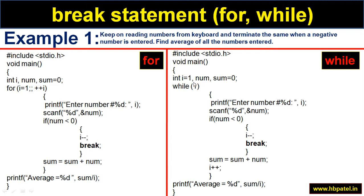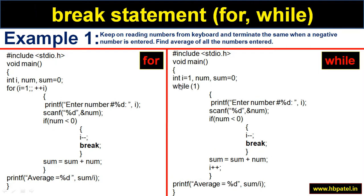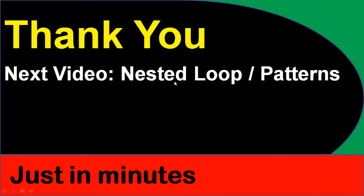The same break example is also written using do-while and while loops. In both cases, the condition is written as while(1), meaning while 1 is not equal to zero — which is always true. This keeps the loop running indefinitely until break is executed. With this, I conclude the break and continue statements in loops. I hope these two examples helped you understand how continue and break work. Thank you for watching. In the next video, we'll cover nested loops and patterns.